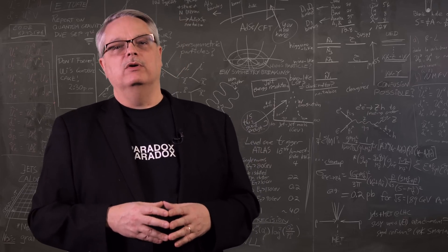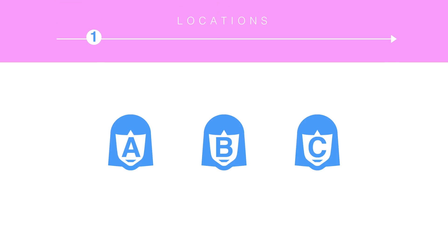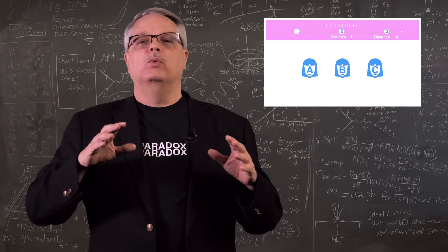In my non-accelerating scenario, there are three observers with the unimaginative names A, B, and C. There are also three locations, which we call one, two, and three. Location one is on the left. Location two is a distance L to the right of one. And location three is a distance 2L to the right of one.